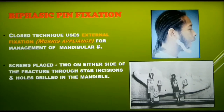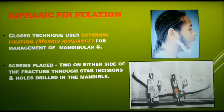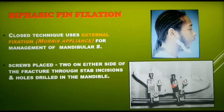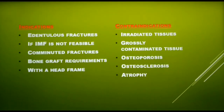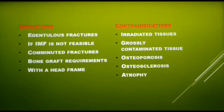Biphasic pin fixation is a closed technique which uses external fixation. Though the fracture is not exposed, a stab incision is made on the skin to fix two screws on each side of the fracture. The pins have an extension out of the skin and are removed after fracture healing. Biphasic pin fixation is used in edentulous fractures where intermaxillary fixation is not feasible, and in comminuted fractures requiring bone grafts. It is contraindicated in irradiated or grossly contaminated tissues, and in bone anomalies like osteoporosis and osteosclerosis.